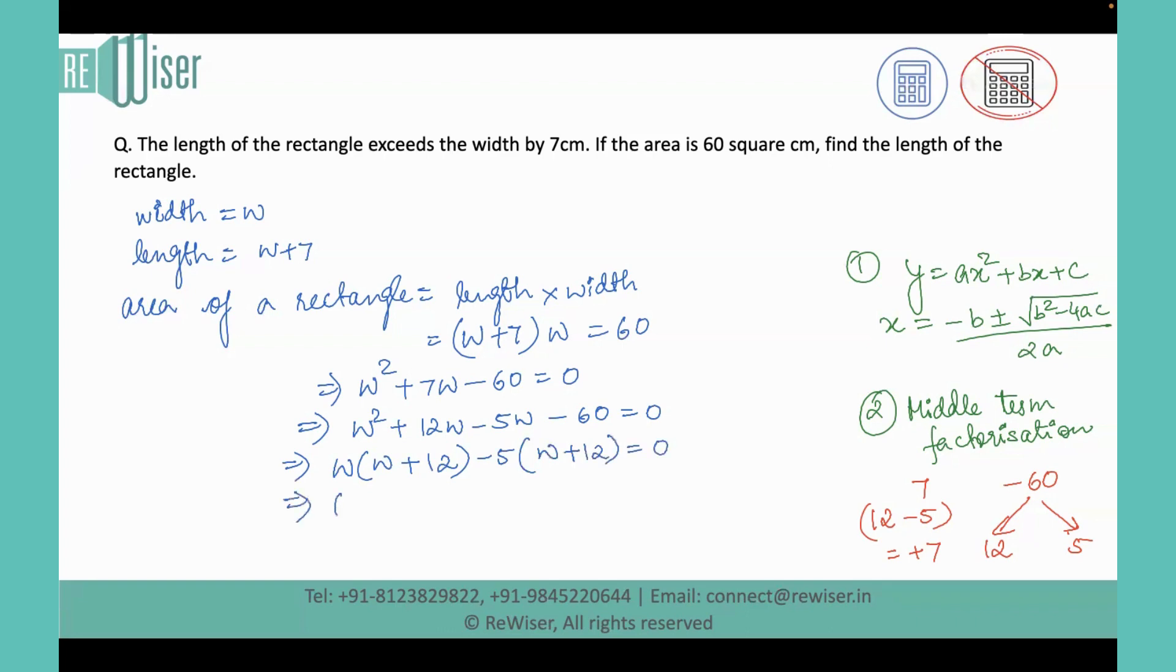Now W plus 12 will be taken as common. From the first term, W is retained and from the next term, minus 5 is retained, which equals 0. We are going to find the roots by making W plus 12 equals 0. So W comes out as negative 12, and from the second factor, W comes out as 5.